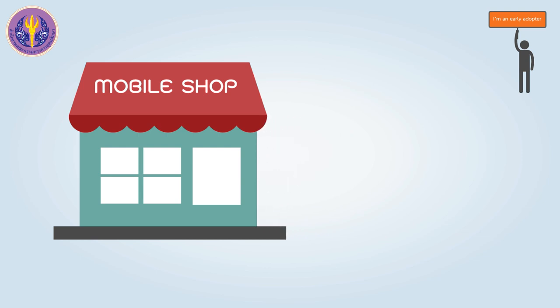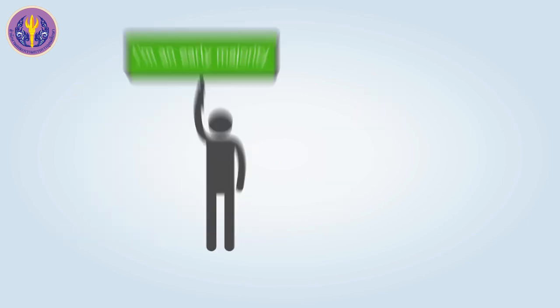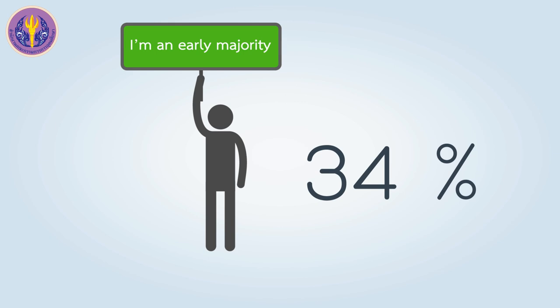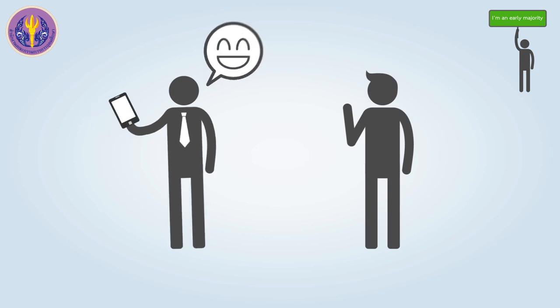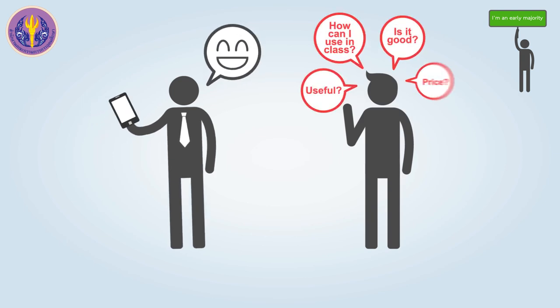The third group is the Early Majority, which is about 34% of people. This group is ready to change and can see the benefits of new innovations, but they are cautious and use reasoning in their decision-making. They want to be confident that the technology will work. So you can see that people who use technology react this way — they have a good result and can change their plan.